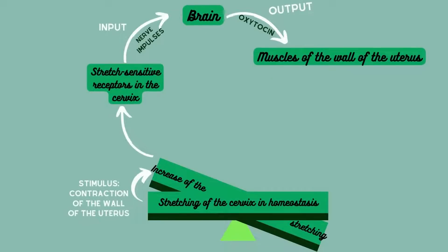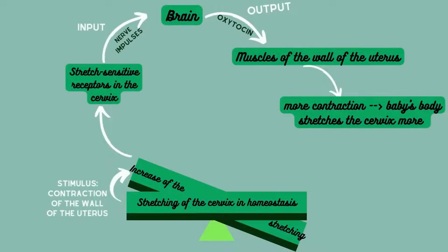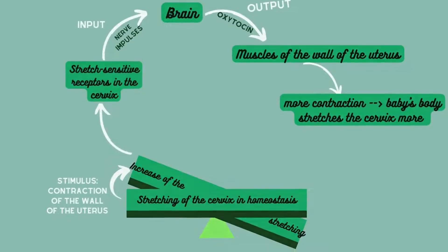The oxytocin released will increase the contraction of the muscles in the wall of the uterus. These contractions will push the baby farther down the uterus and will stretch the cervix more.